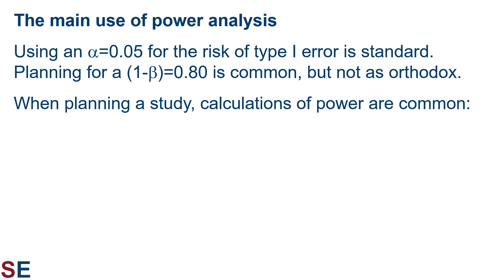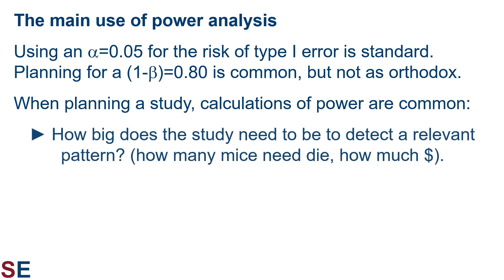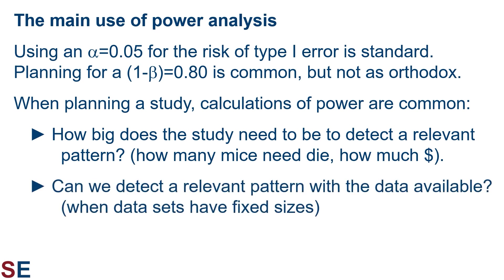When planning a study, calculations of power are common for two main reasons. First, we want to know how big the study needs to be to detect a relevant pattern. This is important because it may determine how many mice need to die or how much money we need to spend. If the number of deaths or amount of money is unreasonable, we need to scrap the experiment and find some other way to answer our question. Animal welfare — the desire to minimize animal deaths — is a major reason why funding agencies often require power analyses for proposals that involve using animals. Second, if there are external limits on the size of the study, we need to determine whether we can detect a relevant pattern with the data available.